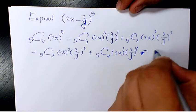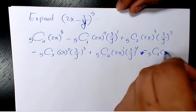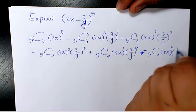and that's going to be minus 5C5(2x)^0(3/y)^5.